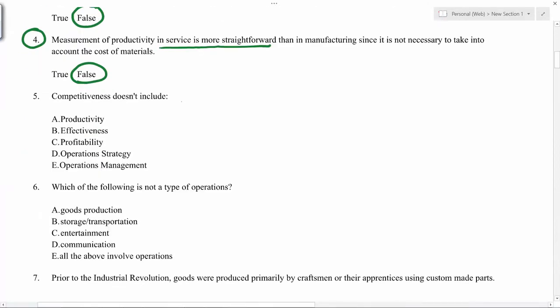Competitiveness, so it includes productivity, effectiveness. Competitiveness doesn't include profitability. Profitability will be the outcome.